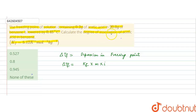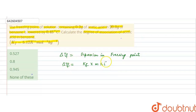The degree of association can be calculated if we first calculate the Van't Hoff factor from the given depression in freezing point. From the Van't Hoff factor, which is related to degree of association, we can further calculate the degree of association.